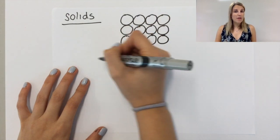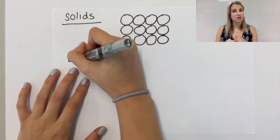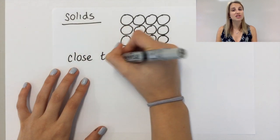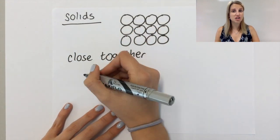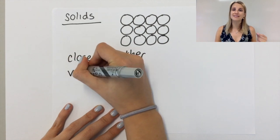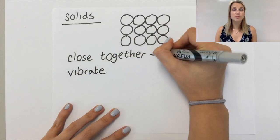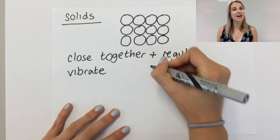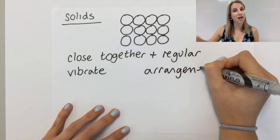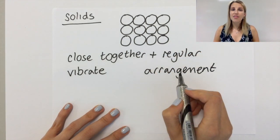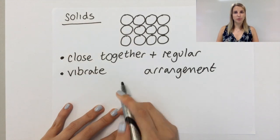If we talk about the movement of these particles, because they're so close to each other, the only thing the particles can do is to vibrate very slightly. So the arrangement of solids is that they are close together and they're arranged in a regular arrangement and the motion is that they vibrate.